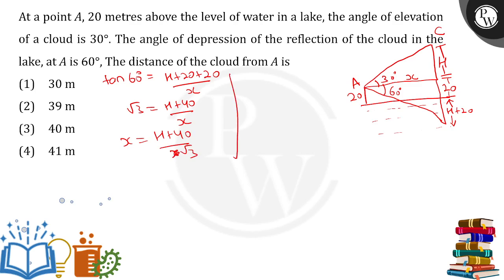Then we have the upper triangle. In the upper triangle we have tan of 30 degrees. Tan of 30 degrees I am assuming to be